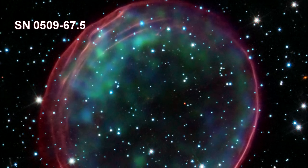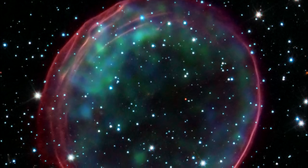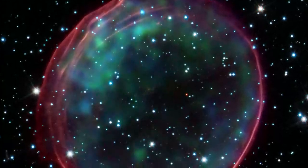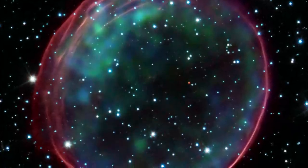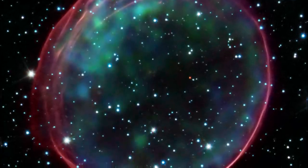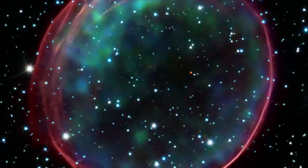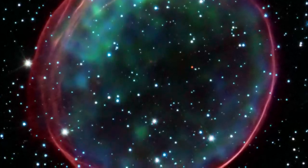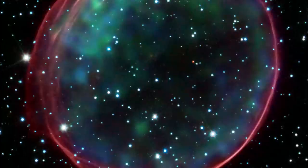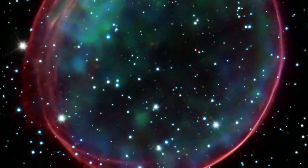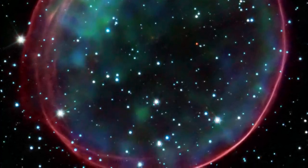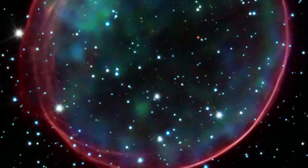This image of Supernova Remnant 0509-67.5 was made by combining data from two of NASA's great observatories, Hubble and the Chandra X-Ray Observatory. The results show soft green-blue hues of heated material from the X-ray data, surrounded by the glowing pink optical shell, which shows the ambient gas being shocked by the expanding blast wave from the supernova.